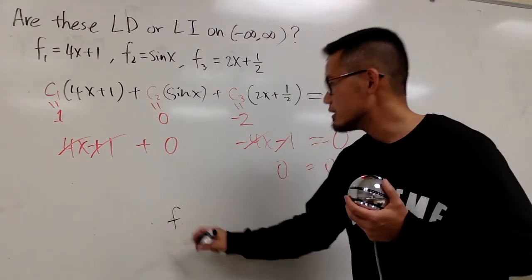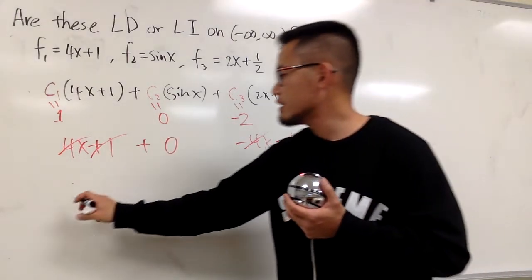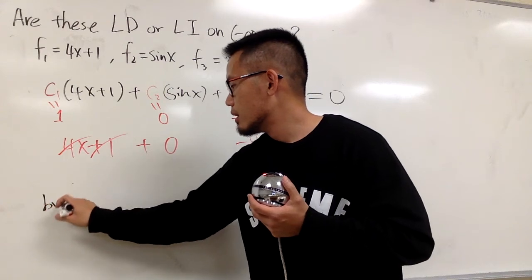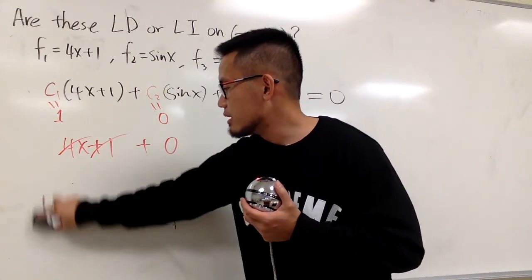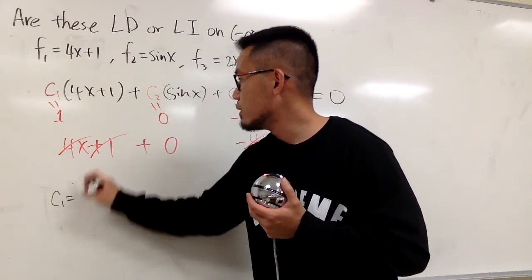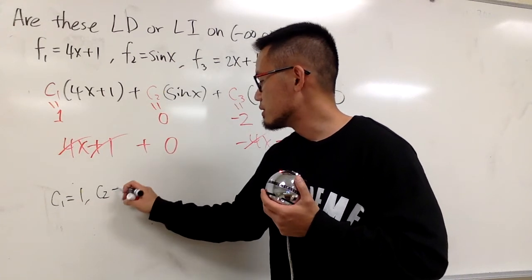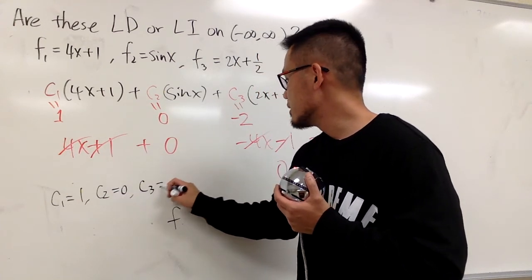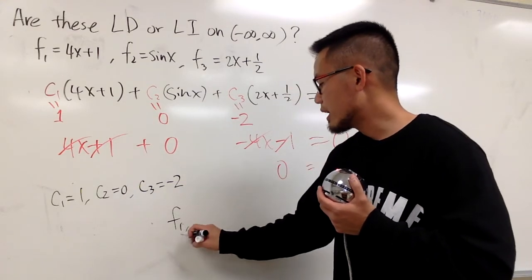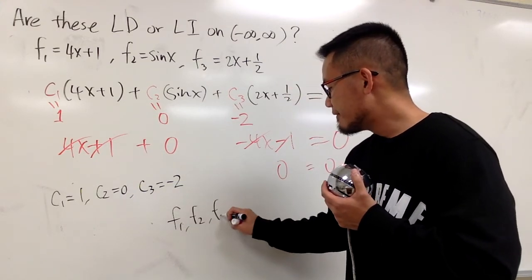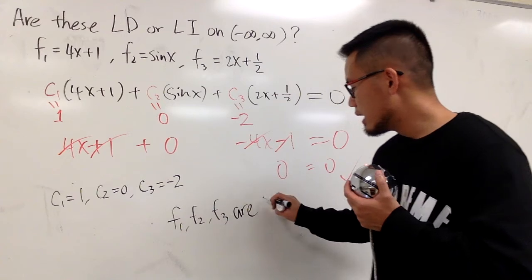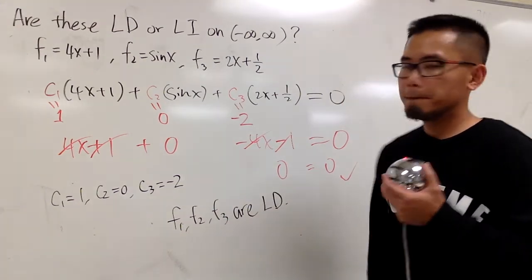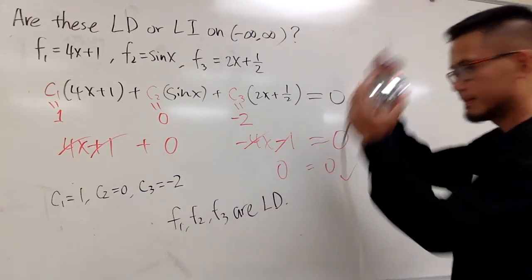So at the end, you can see that by selecting, I'll just say, by selecting c1 to be 1, c2 to be 0, and c3 to be negative 2, you can show that f1, f2, f3 are linearly dependent. That's it. That's it.